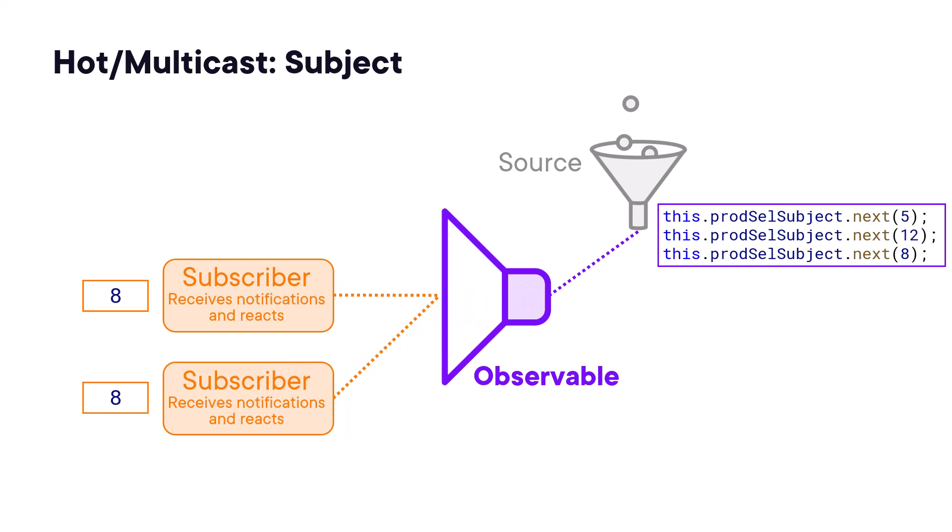When working with a subject, it's important to pay attention to when it emits and when subscribers subscribe. The code will miss any emissions that occur before their subscription. What if we want a later subscriber to receive the prior emission?